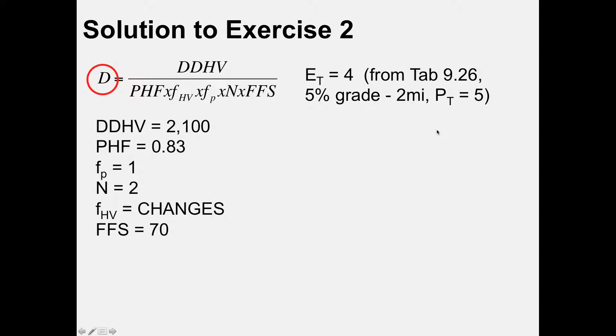So in that case, we'll recalculate the F-sub-HV, the factor for heavy vehicles, putting in a four instead of a two and a half. And this is the new factor. And we'll recalculate everything. Here's the passenger car per lane, per hour.